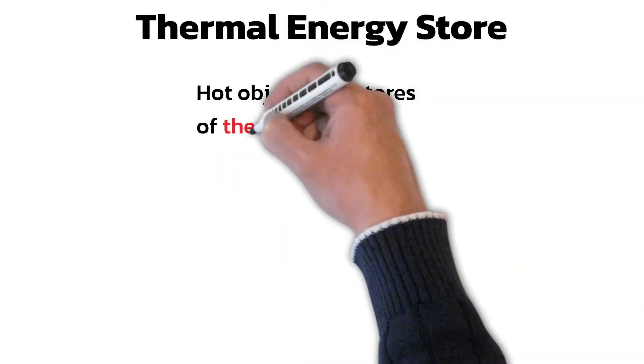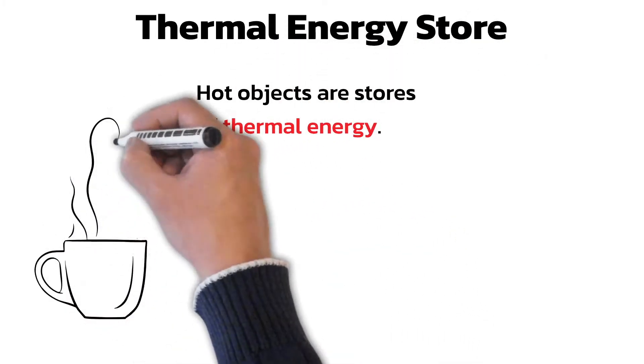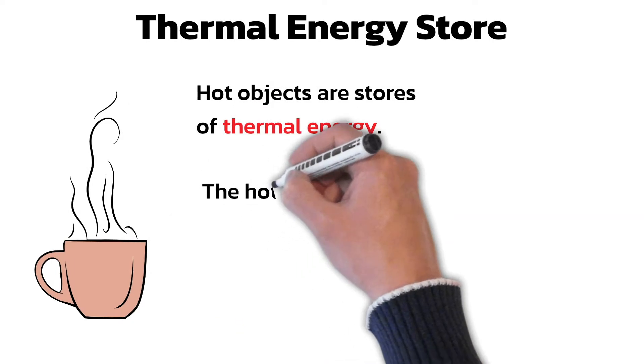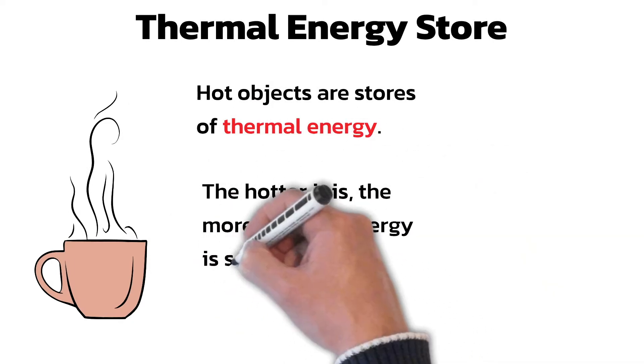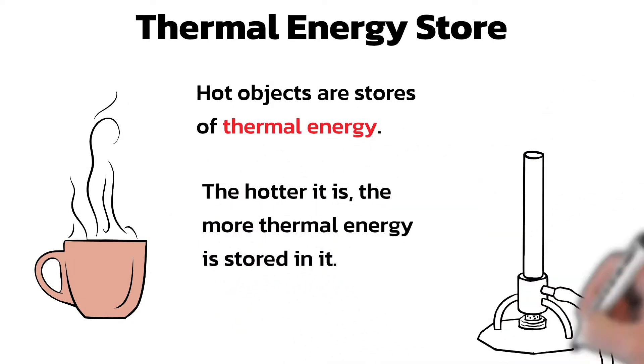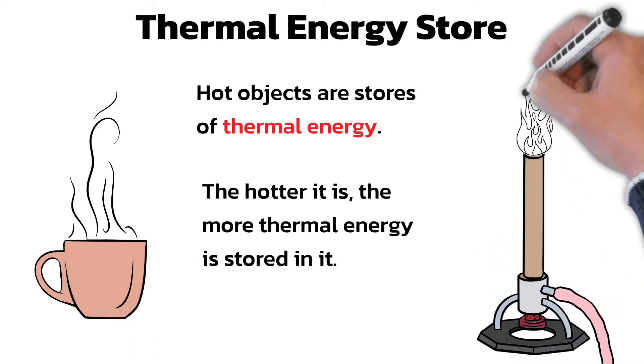There are 8 energy stores you need to know about. The first is the thermal energy store. Hot objects are stores of thermal energy. The hotter it is, the more thermal energy is stored in it. So a Bunsen burner flame will have more energy in its thermal energy store than a hot cup of coffee.